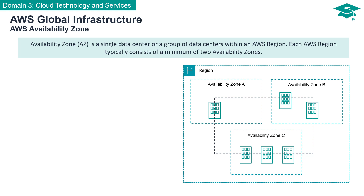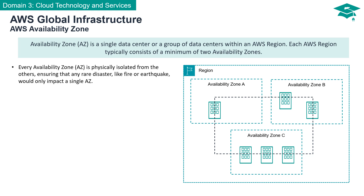An availability zone, often abbreviated as AZ, is a single data center or a group of data centers within an AWS region. Each AWS region typically consists of a minimum of two availability zones. Each availability zone operates independently, isolated from others within the same AWS region. This isolation ensures that any unforeseen events, such as a fire or an earthquake, impact only a single AZ, leaving the others unscathed. Your data is guarded against disruptions of all kinds.